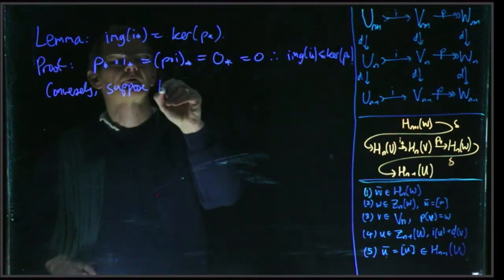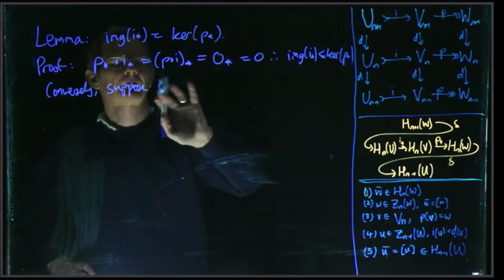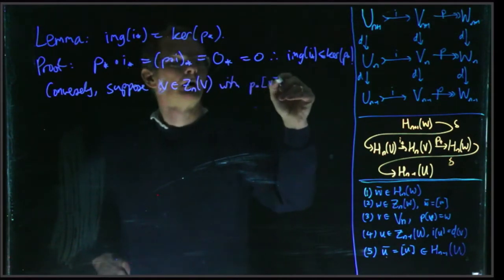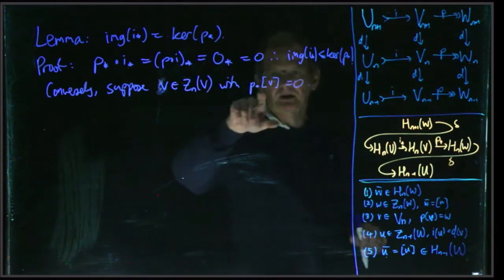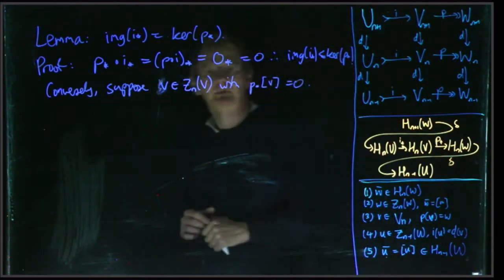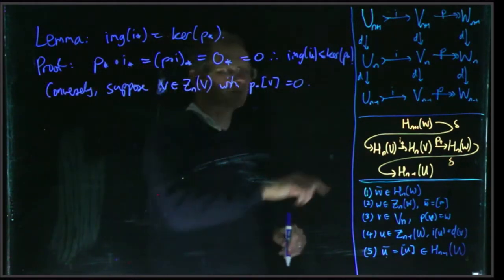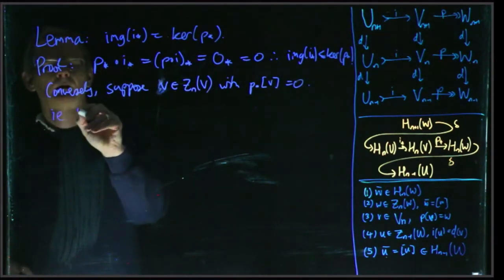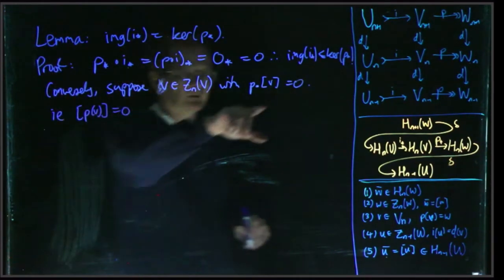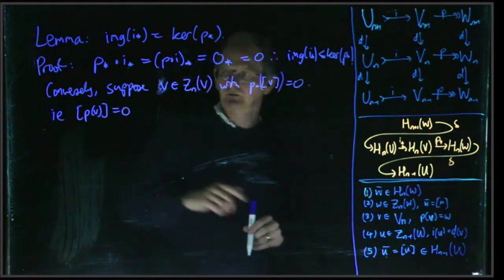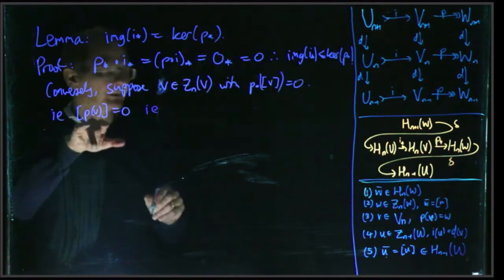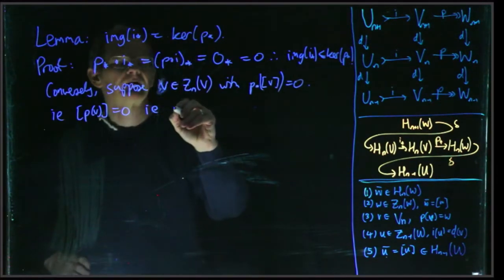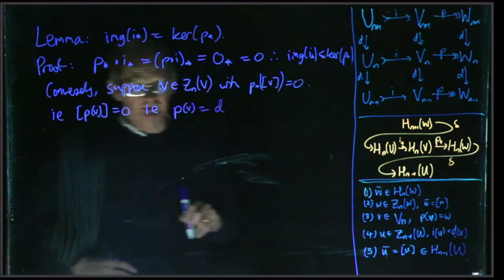Suppose we've got some element, call it [v] — so some cycle — and the corresponding homology class gets sent to zero, in other words it lies in the kernel, so we need to show that it also lies in the image of i_*. Now p_* of [v] is the same thing as [p(v)], so this has got to be zero. For [p(v)] to be zero, the coset p(v) plus boundaries is zero, so p(v) must be a boundary, meaning p(v) equals d(w') for some w'.